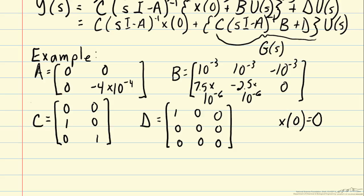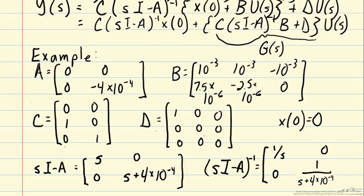To calculate G(s), the first thing we need to do is calculate sI minus A, which is s, 0, 0, and s plus 4 times 10 to the minus 4. Then we need to invert that. In general, that would not be so trivial, but because it's a diagonal matrix, we can just take the inverse of the diagonal elements. If it wasn't diagonal, you could use something like Kramer's rule to invert a two-by-two matrix.